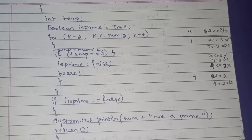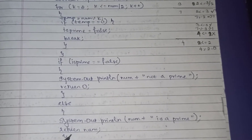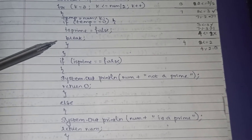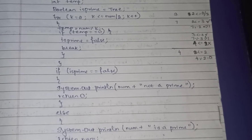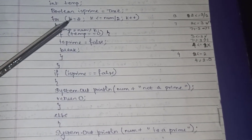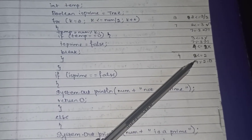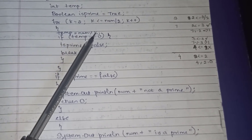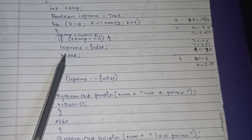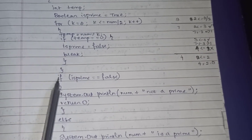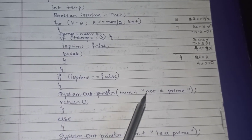In the else part, it prints 'this number is a prime number' and returns num. For a non-prime, take 4: k = 2, 2 <= 2 is true, temp = 4 mod 2 = 0. Since temp == 0, is_prime is set to false and the loop breaks. The outer if (is_prime == false) is now true, so it prints 'number is not a prime' and returns 0.